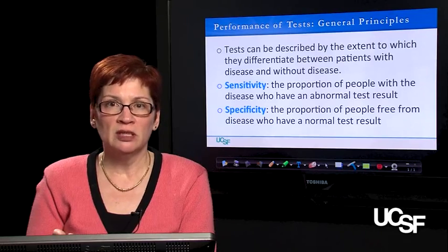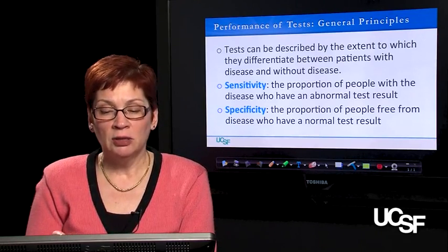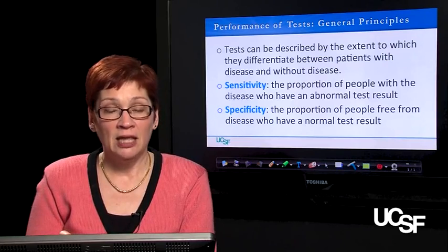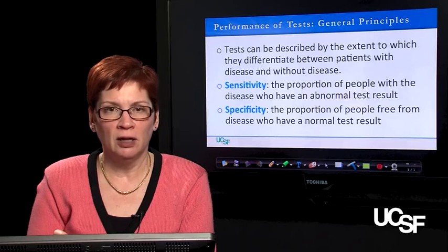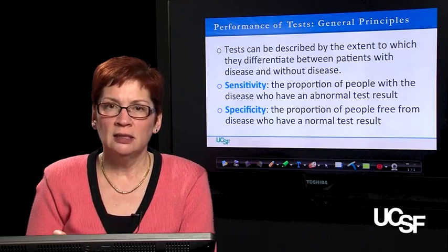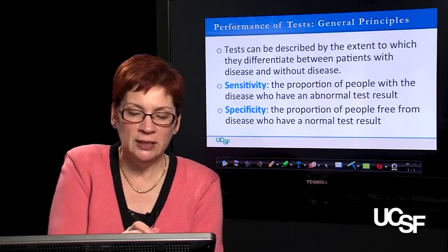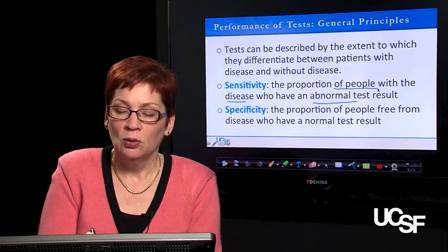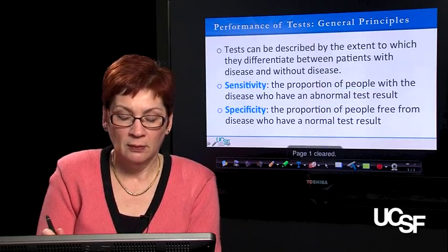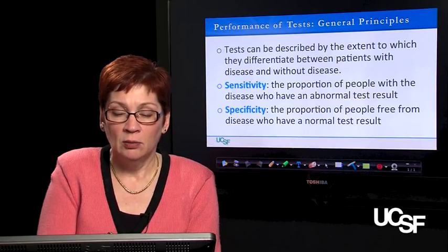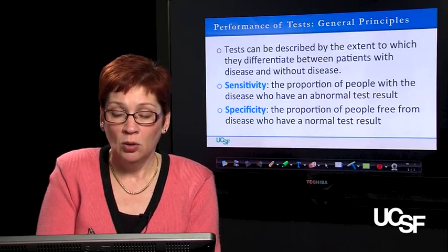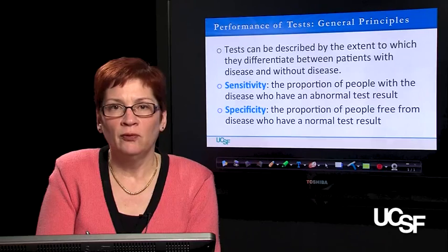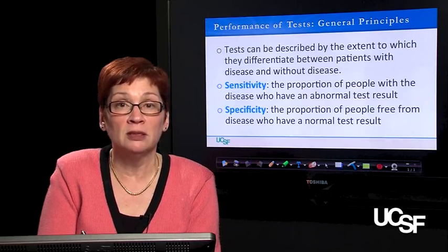Let's talk about performance of tests and general principles. Tests can be described or differentiated by the extent to which they distinguish between patients who have a disease and patients without the disease — that's why we order a test. There are two key characteristics of tests themselves. The first is sensitivity: the proportion of people who have the disease in question who also test positive for that disease — the proportion of all people with disease who have an abnormal test result. The specificity of a test describes the proportion of people who are free from disease who also test negative — who have a normal test result. These are inherent characteristics of the test before it is given to your patient, referring to performance in general populations.